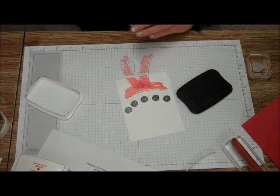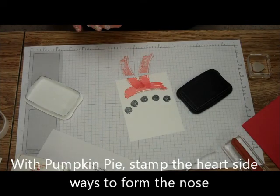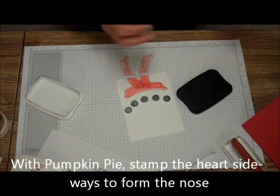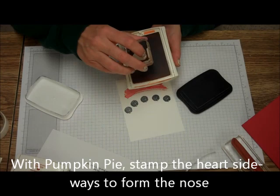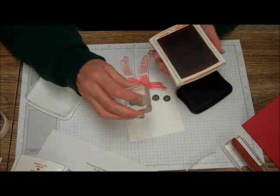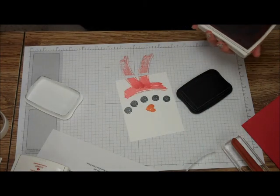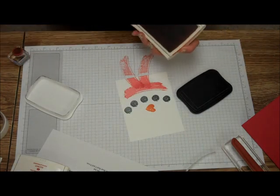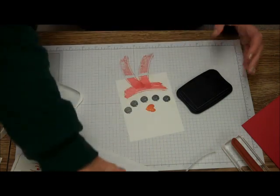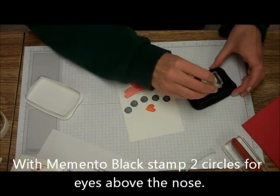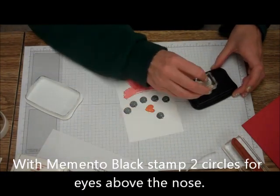And then we're going to take our Pumpkin Pie and the little heart, and we're just going to stamp the heart sideways, just like that. And then we're going to put two more eyes on with the charcoal.